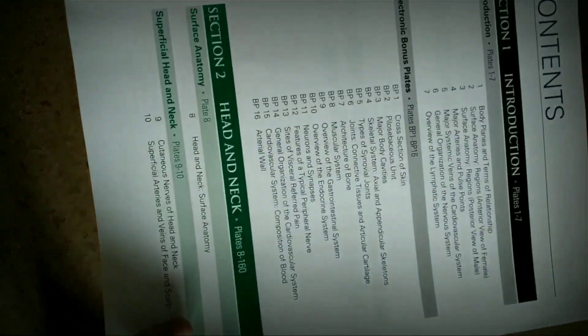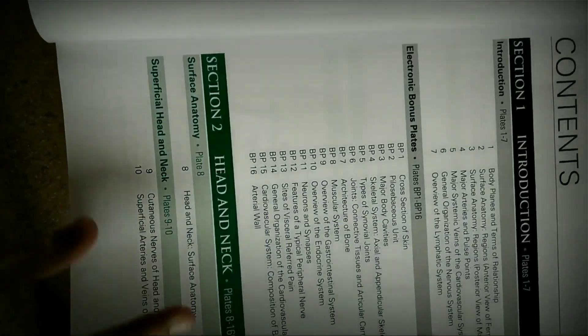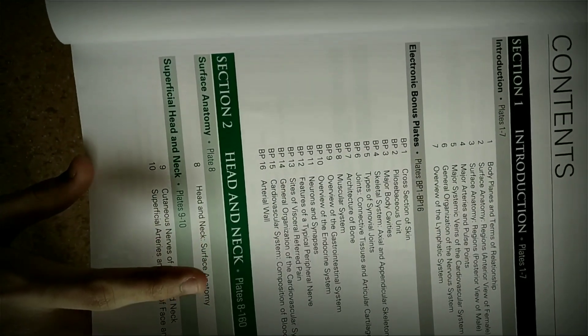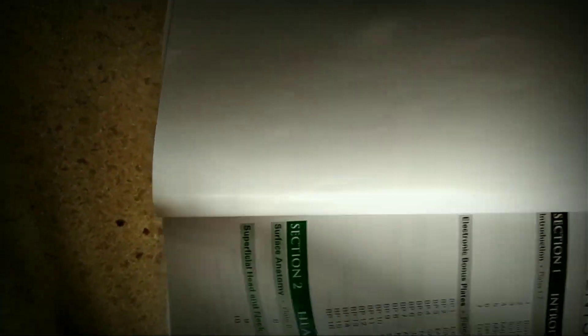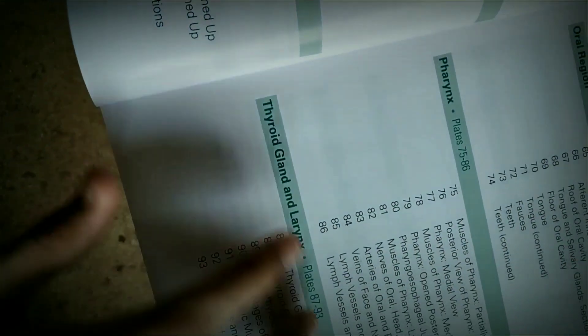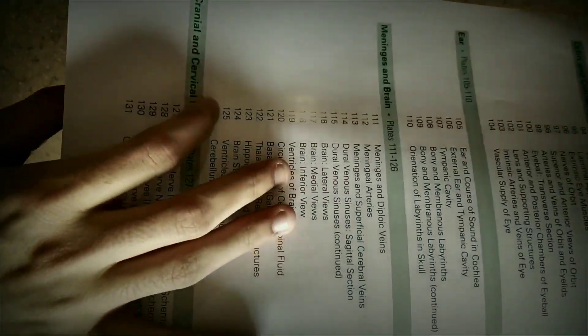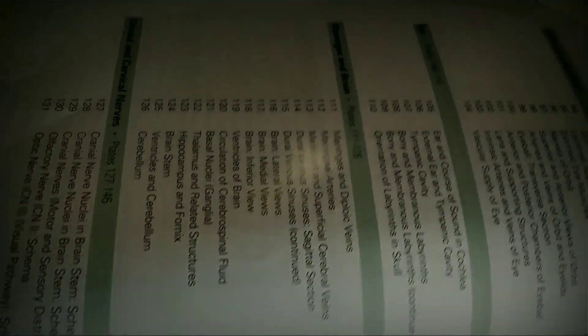This is all the contents. You can have all the things in this human anatomy like head and neck, bones and ligaments. This is plates - oral region, neck, nasal region, pharynx, thyroid gland and larynx. Each and every single topic is covered here.